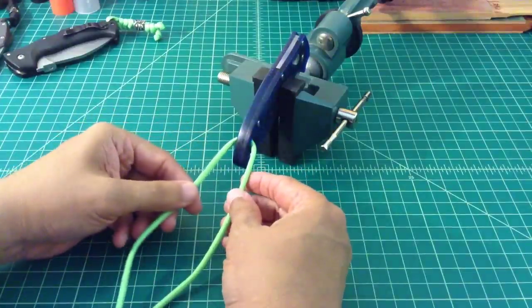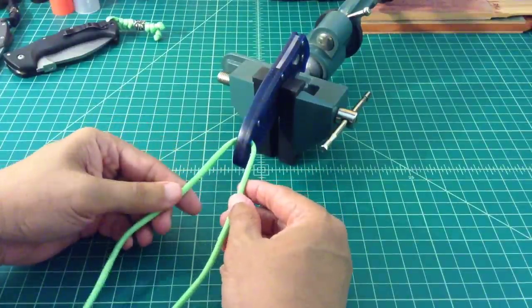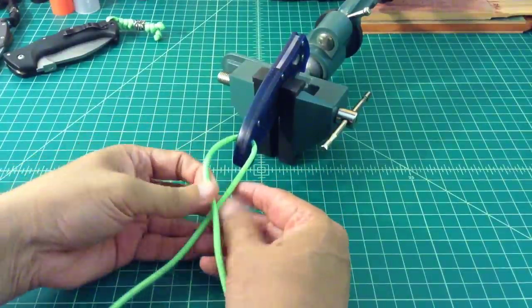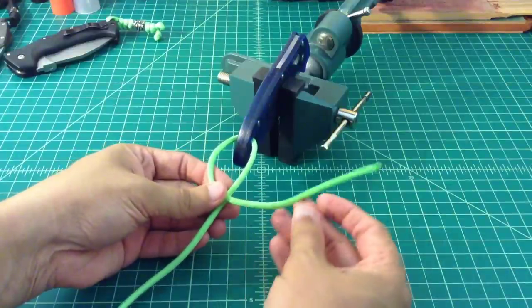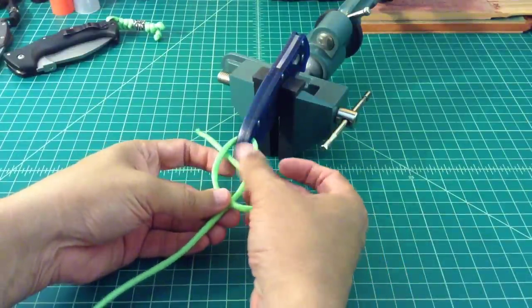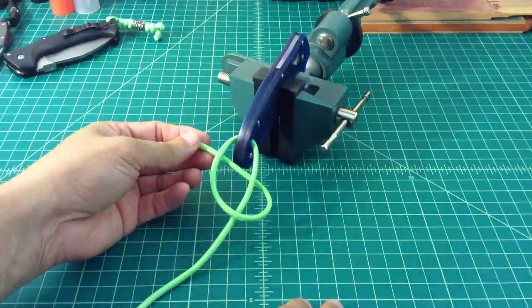So what you want to do with this particular lanyard is take the left hand side and cross it over the right hand side and then bring it under. So that's what it's going to look like. Very simple.